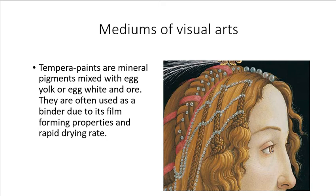Next is tempera. Tempera paints are mineral pigments mixed with egg yolk or egg white, often used as a binder due to its film-forming properties and rapid drying rate. The disadvantage of tempera is that it smells. The advantage is it dries quickly, and in the past it was mostly used by painters because of the effect it creates — it becomes like an oil painting because it reflects light. Tempera painting is not a common medium in contemporary times.